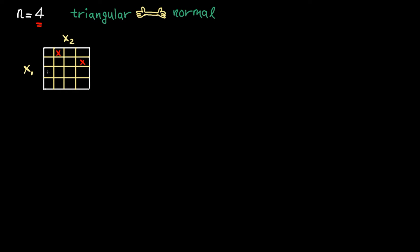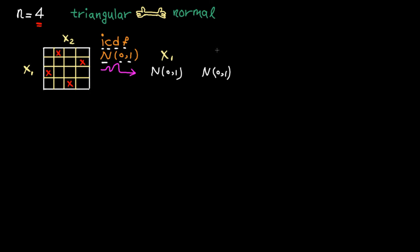Let's say this is our Latin square. Then we need to apply the inverse cumulative distribution function of a normal variable with zero mean and standard deviation of one in order to map each sample to a value. The generated values have normal distributions. At this stage, we have independent normal variables — x1 and x2 don't know each other.